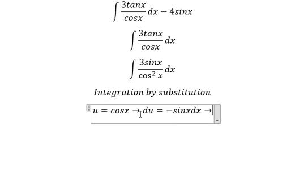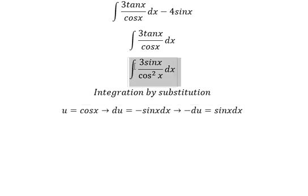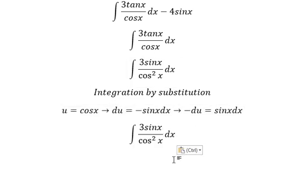We put the negative next to du. So this one we change for u, and we have u squared. Sinx dx we change for negative du.